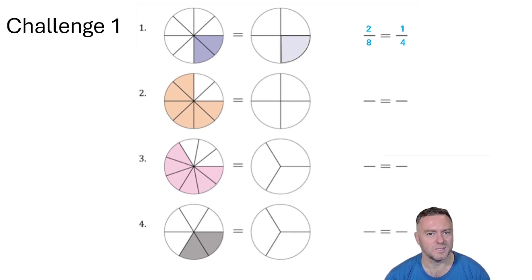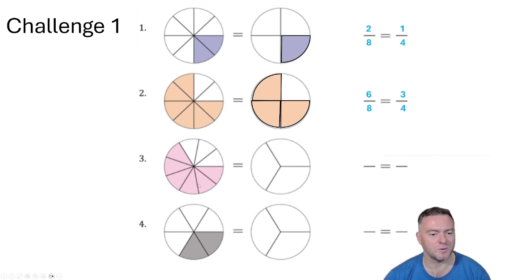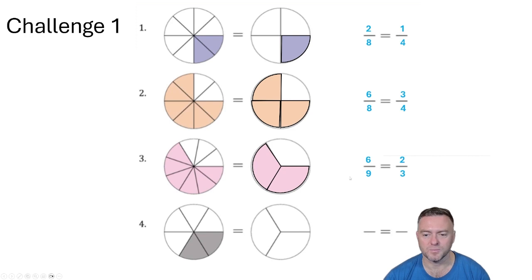For the next one, you can see it's the same as 6 out of 8, which then gives us the same as 3 quarters. And the next one, you can count 9 parts total with 6 parts selected, so you've got 6 out of 9. But that's also equivalent to 2 thirds because we can divide both the top and the bottom by 3.